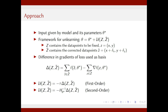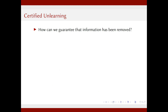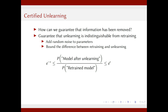Another key question is: what does it actually mean to unlearn something, and how can we guarantee that something has been unlearned? To address this, we propose the concept of certified unlearning, which is a very strong theoretical guarantee stating that a model after unlearning is indistinguishable from a model retrained from scratch without the information to be removed. We bound the difference between a model after unlearning and one that has been retrained — a formulation inspired by the concept of differential privacy from cryptography, where similar tasks arise.